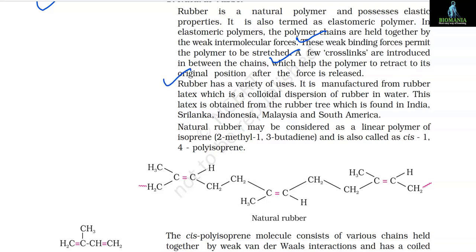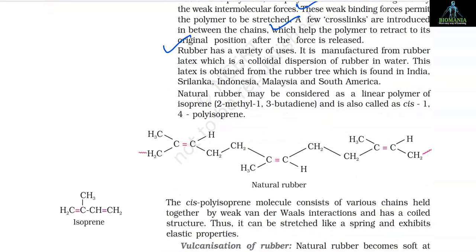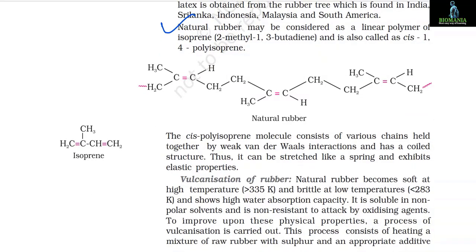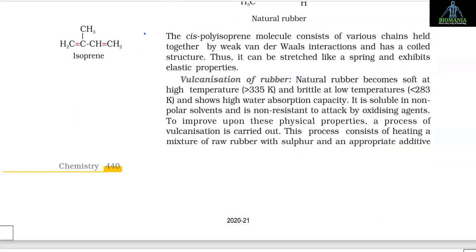Rubber is manufactured from rubber latex, which is a colloidal dispersion of rubber in water. This latex is obtained from the rubber tree found in India, Sri Lanka, Indonesia, Malaysia and South America. Natural rubber may be considered as a linear polymer of isoprene (2-methyl-1,3-butadiene) and is also called cis-1,4-polyisoprene. The cis-polyisoprene molecule consists of various chains held together by weak van der Waals interactions and has a coiled structure, allowing it to be stretched like a spring and exhibit elastic properties.